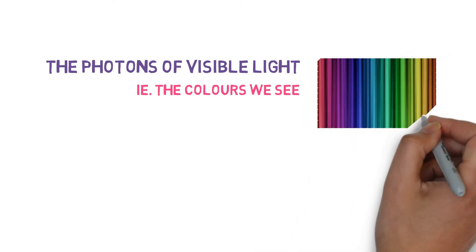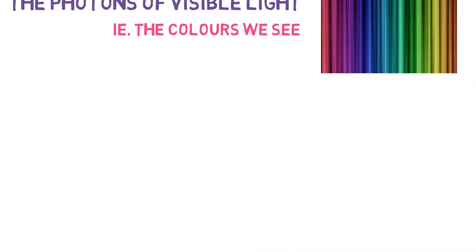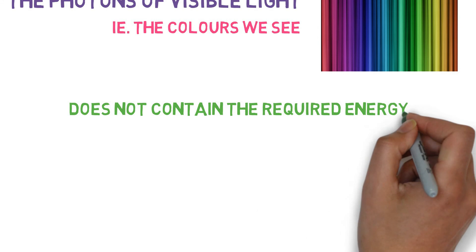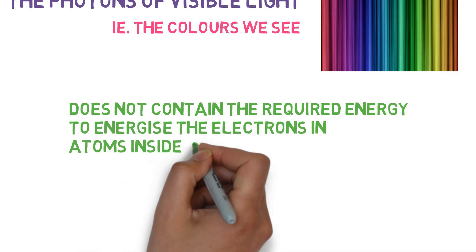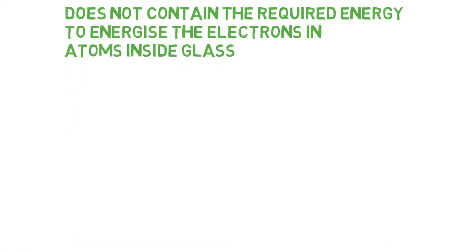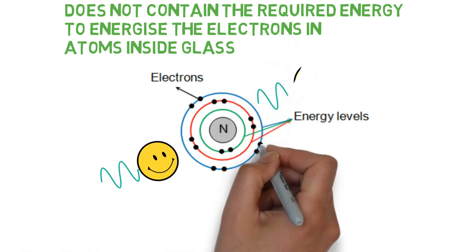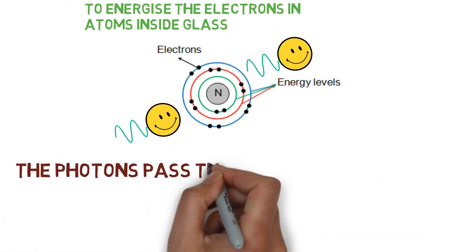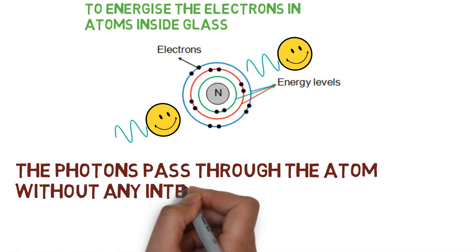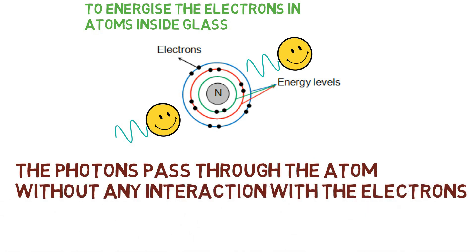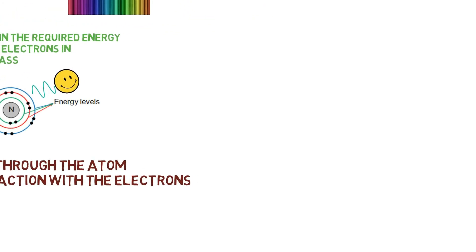This phenomenon of absorption and then release of photons gives color to the objects. The photons of visible light, that is the colors we see, have a fixed wavelength. But the photons of this visible range do not contain the required energy to energize the electrons in atoms inside the glass. So that means that these photons pass right through the glass without interacting with any electrons.